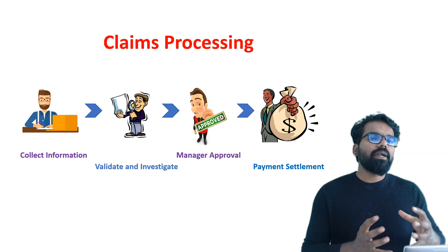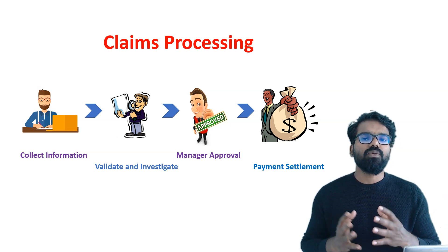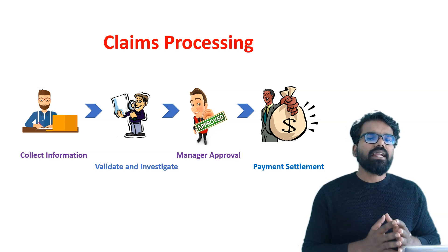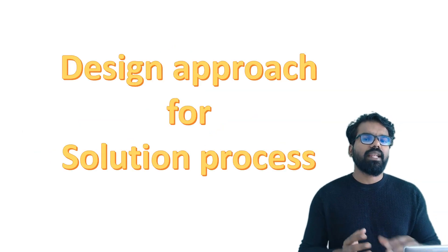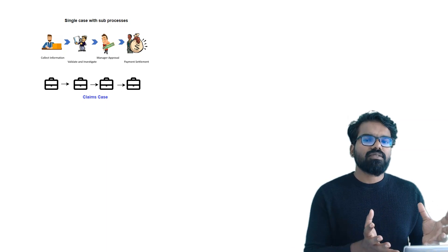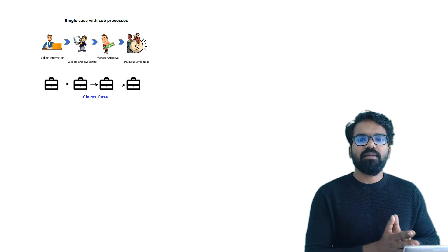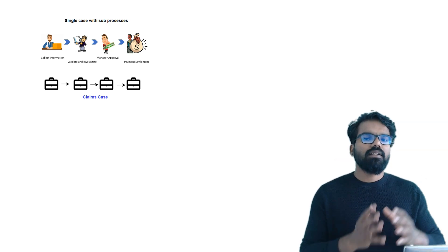Our job is to implement all these business processes of the claims processing into a Pega application by creating a new case type. Once we get all the business requirements, we can create our HLD — the high level design for our case type. The first solution approach is that a claim can be a single case, where all parallel processes or sub-processes are handled within it. For example, investigation can be a sub-process, and payment settlement can be a sub-process — there can be only one case created in Pega.